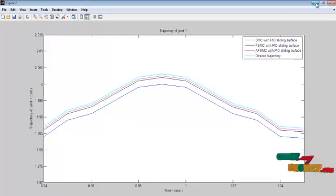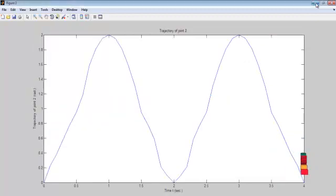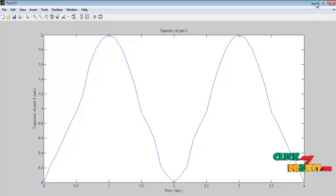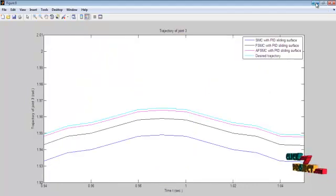First one is the sliding mode, fuzzy sliding mode control, adaptive fuzzy sliding mode control, and final is the desired trajectory. Next one is the trajectory of joint two output waveform. This is the corresponding comparison output of the trajectory of joint two. This is the trajectory of joint three output waveform. And also this is the corresponding comparison of the trajectory of joint three output waveform.